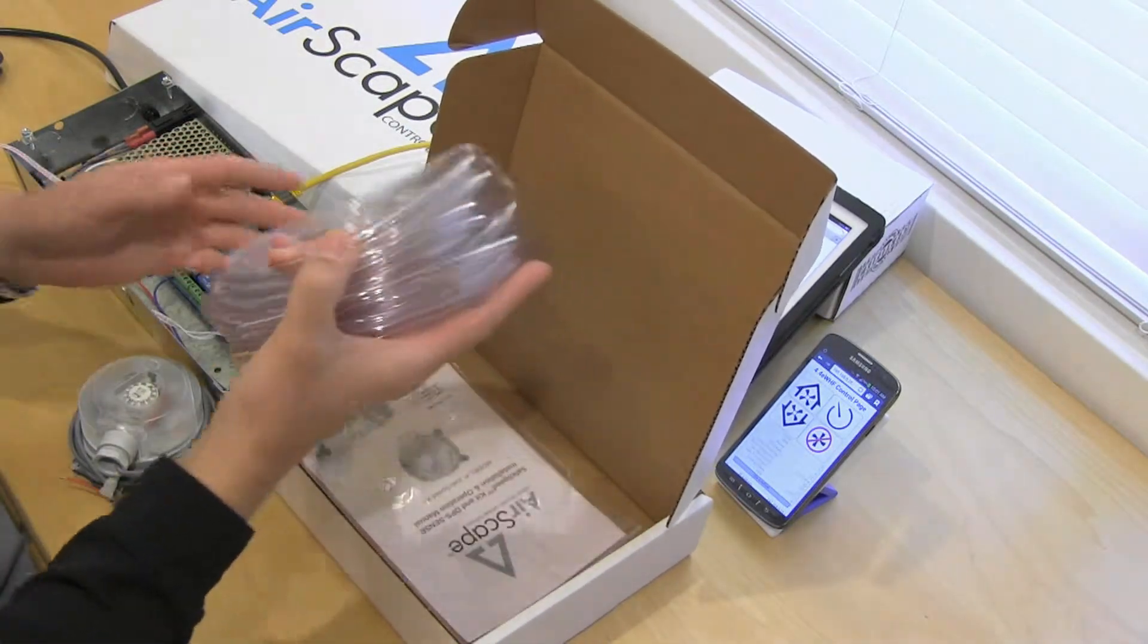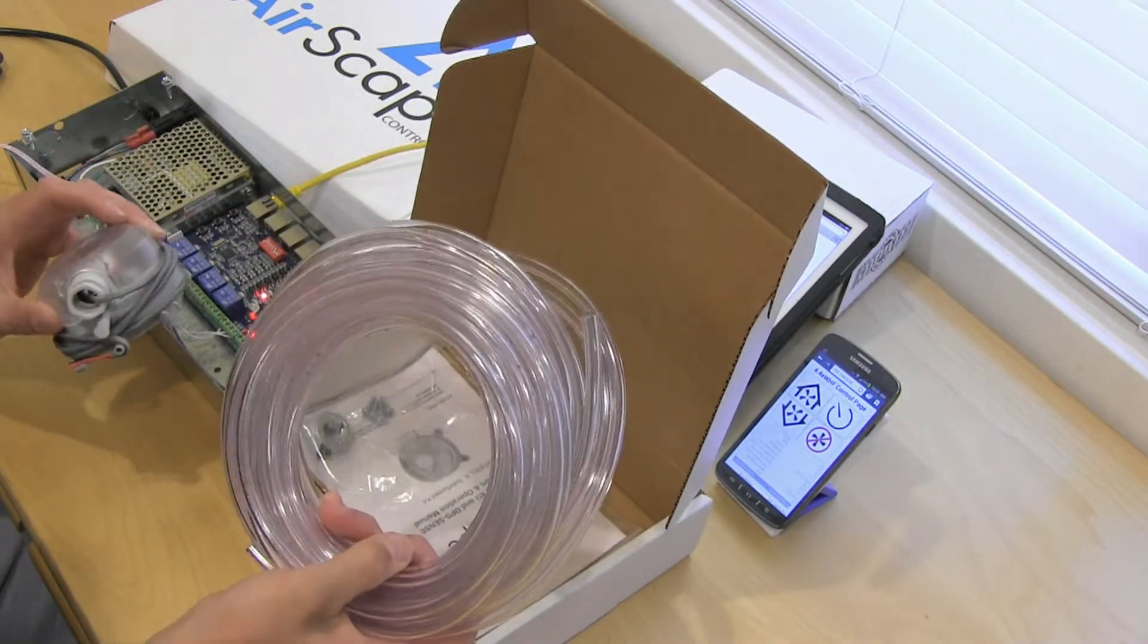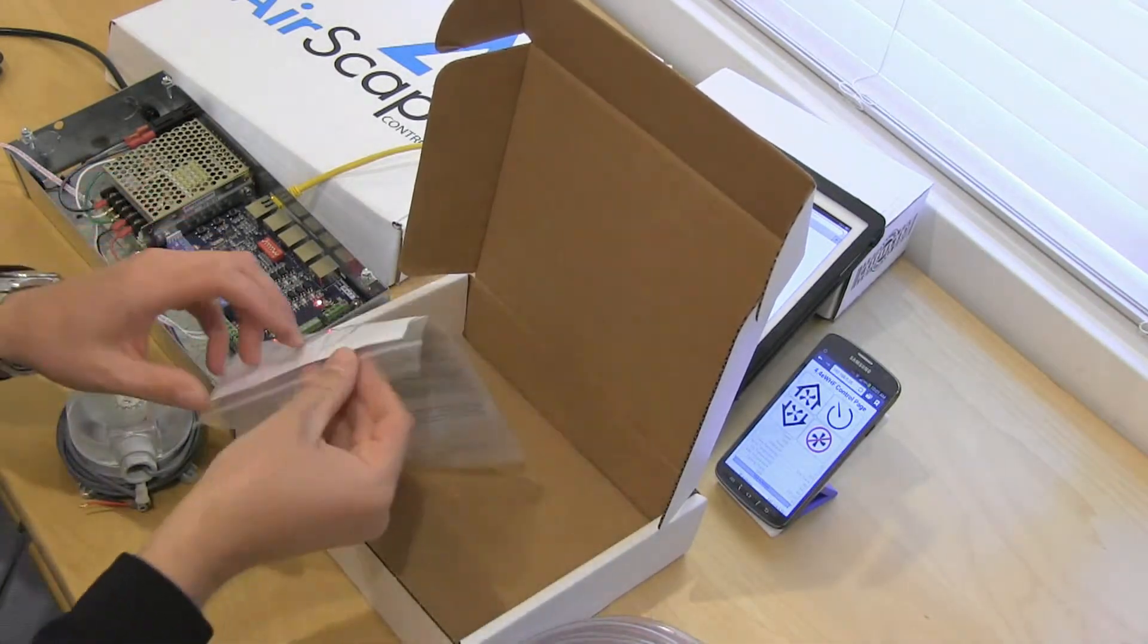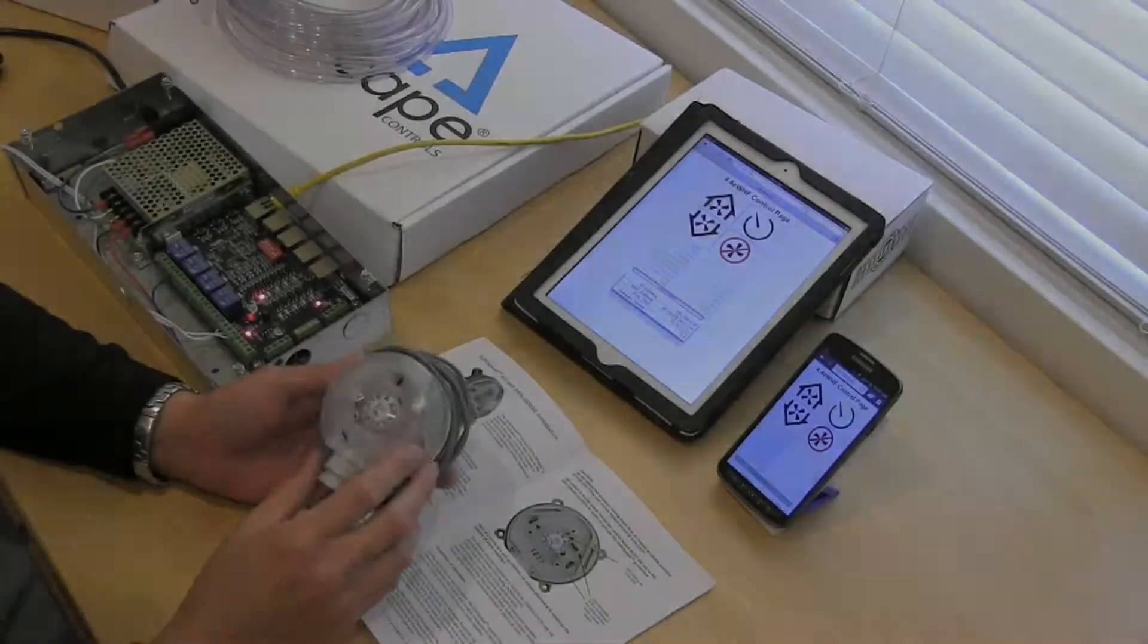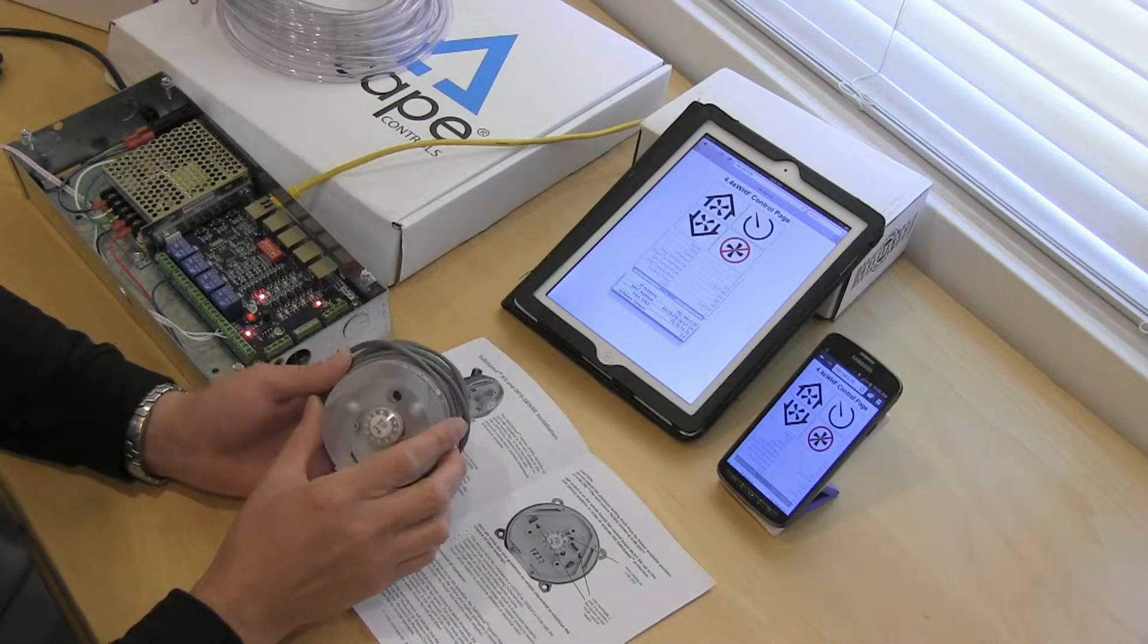You've got pressure tubing for the low and high side, so for the outdoor tubing and the inner tubing as well. Some grommets and of course the installation manual. So here's the DPS sensor, this is the actual pressure sensing element that comes with the kit.